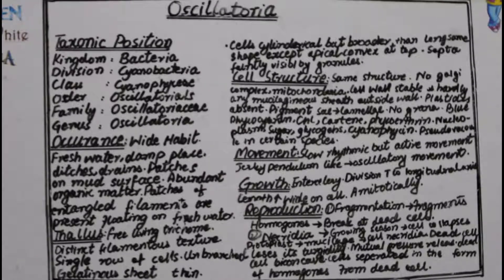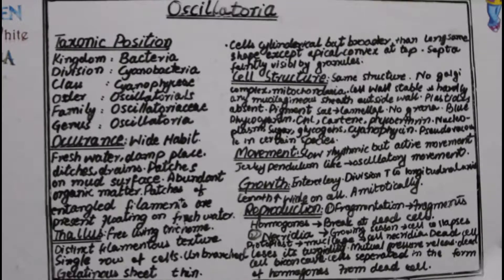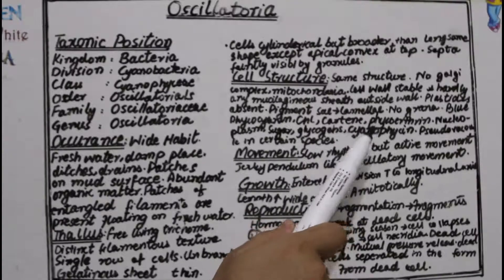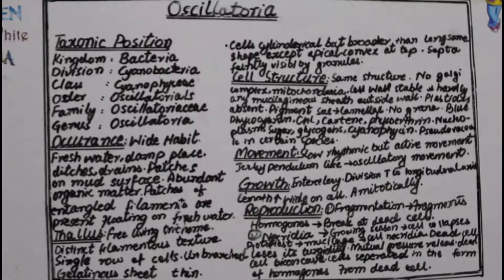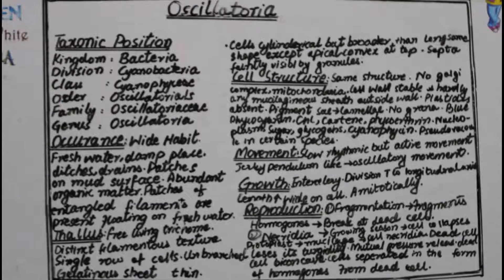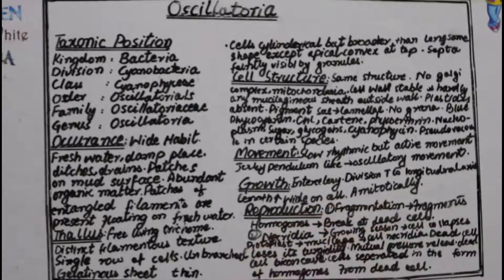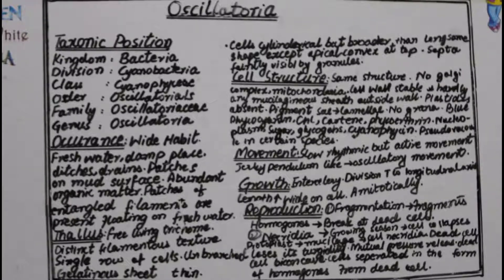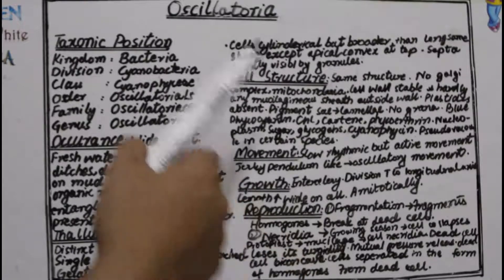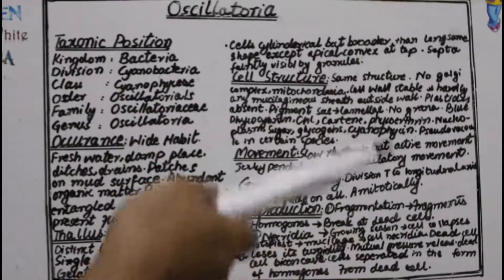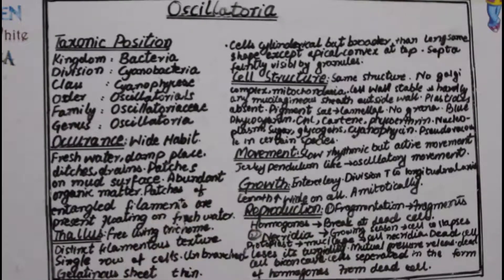Reserve material in Oscillatoria is in the form of sugars, glycogen, and most importantly cyanophycean starch, which is a proteinous reserve food source. Additionally, pseudovacuoles may be present in some species of Oscillatoria and may contain some material.